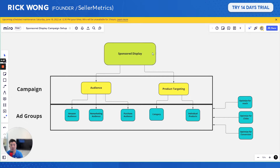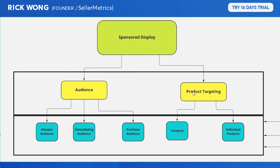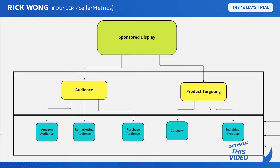As you can see in this chart, under the umbrella of sponsored display there are two main targeting types: audience targeting and product targeting. For product targeting, you just plug in a certain ASIN or a particular category and target. Under the product targeting umbrella there is category targeting and individual products targeting.